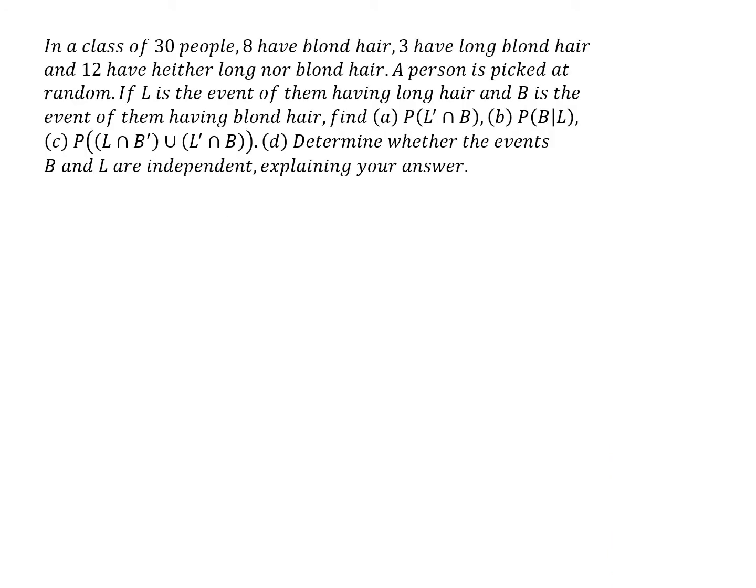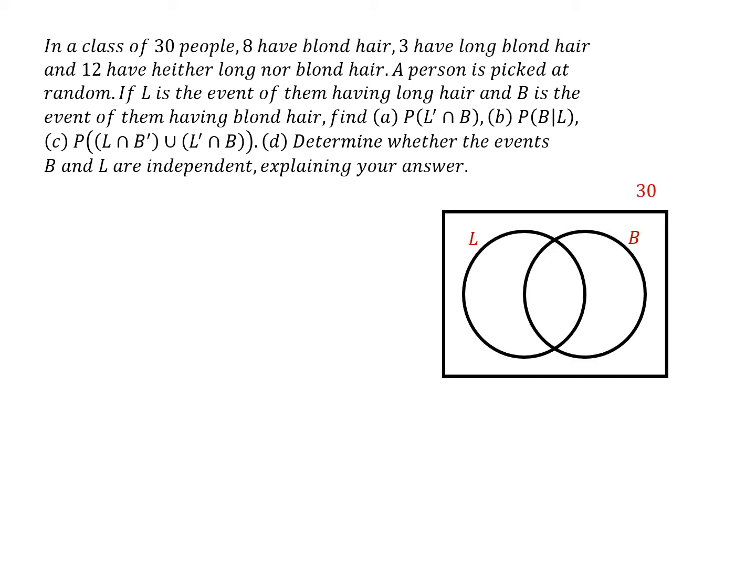The first thing I'll do is draw a Venn diagram to see what's going on. Here's the basic Venn diagram with two sets: a set of people with long hair and a set of people with blonde hair. We assume they overlap until we know otherwise. 30 people altogether.